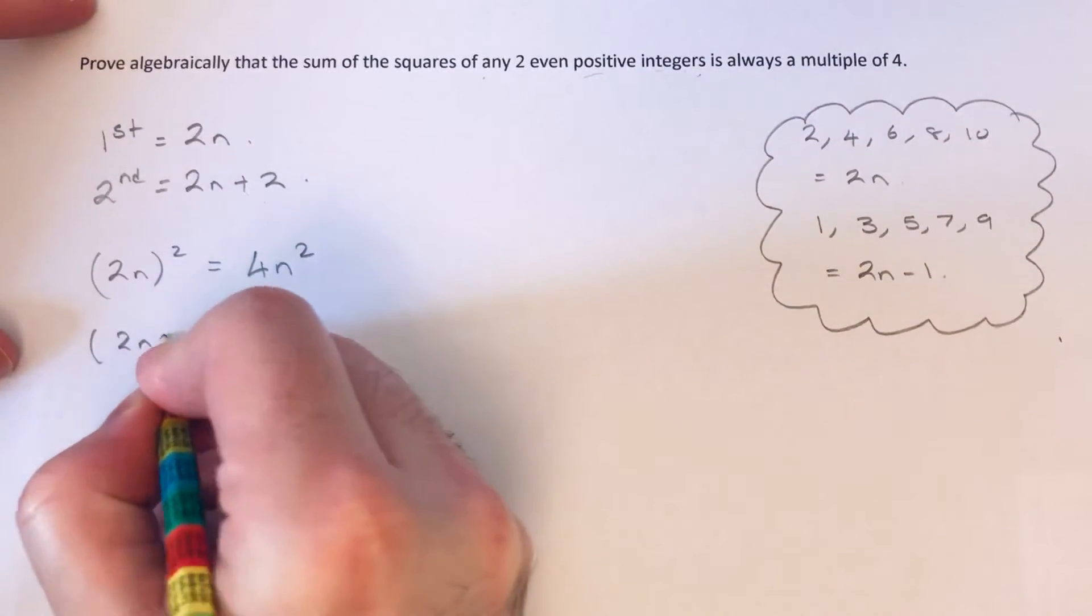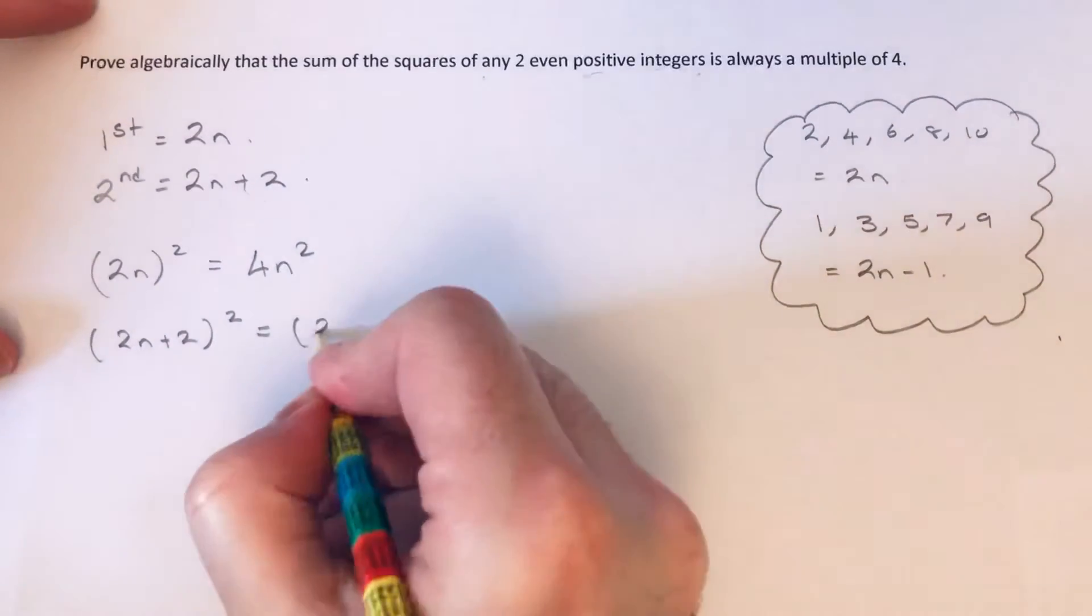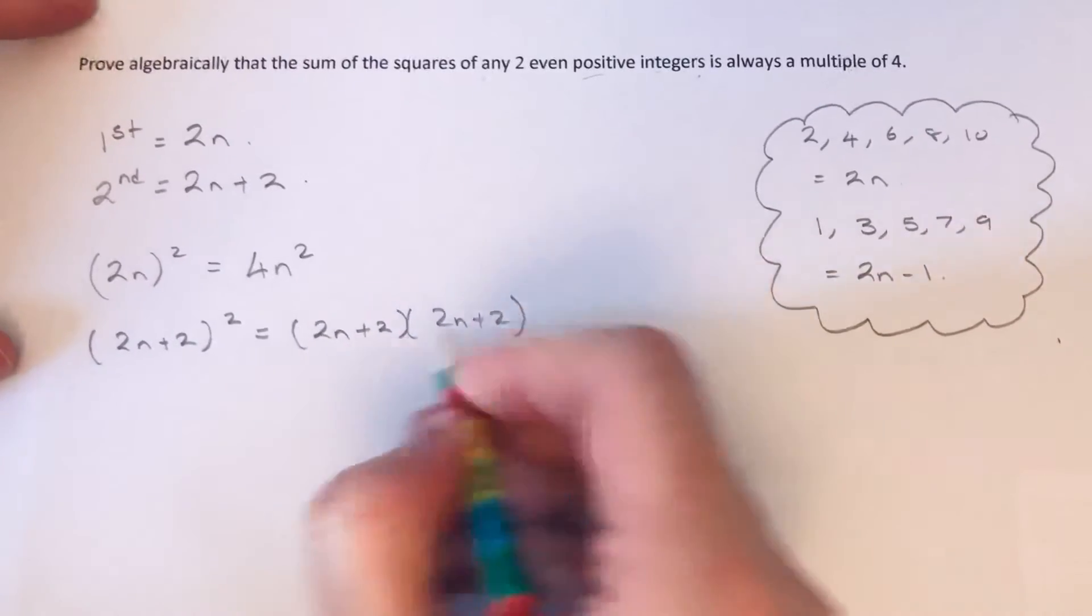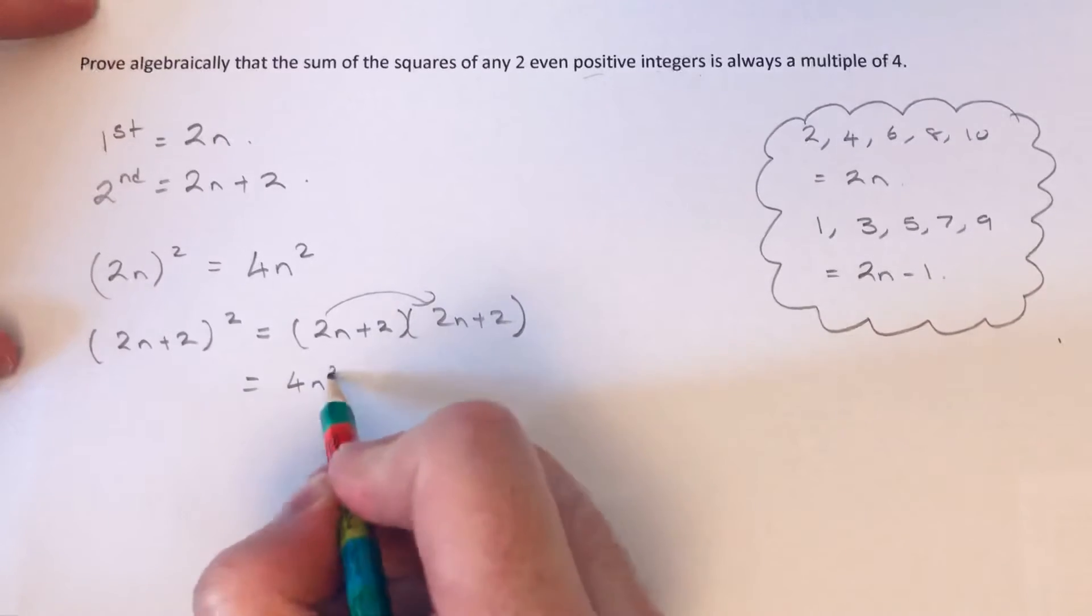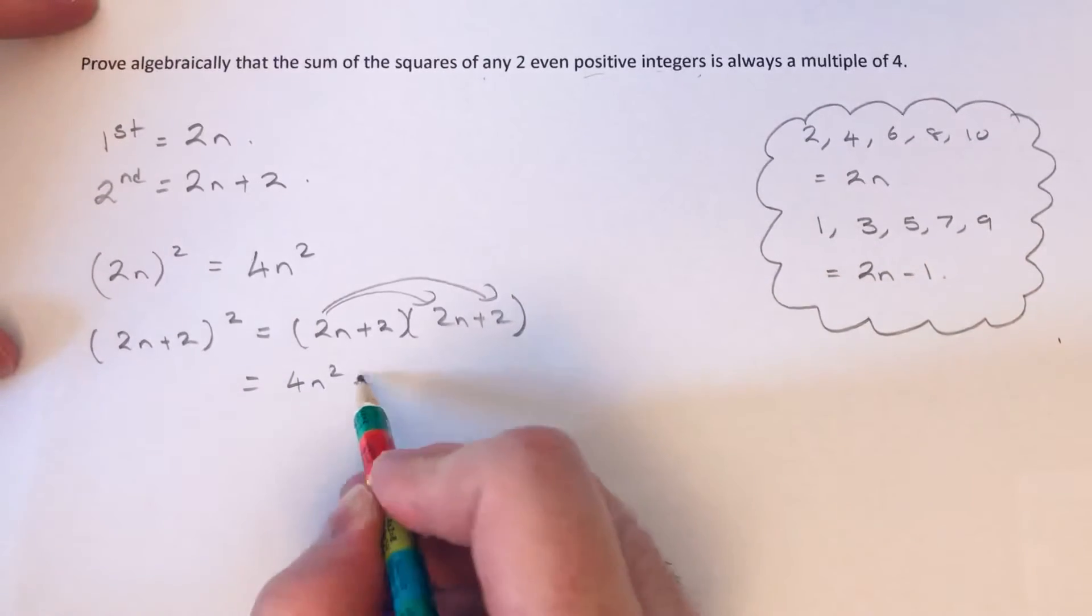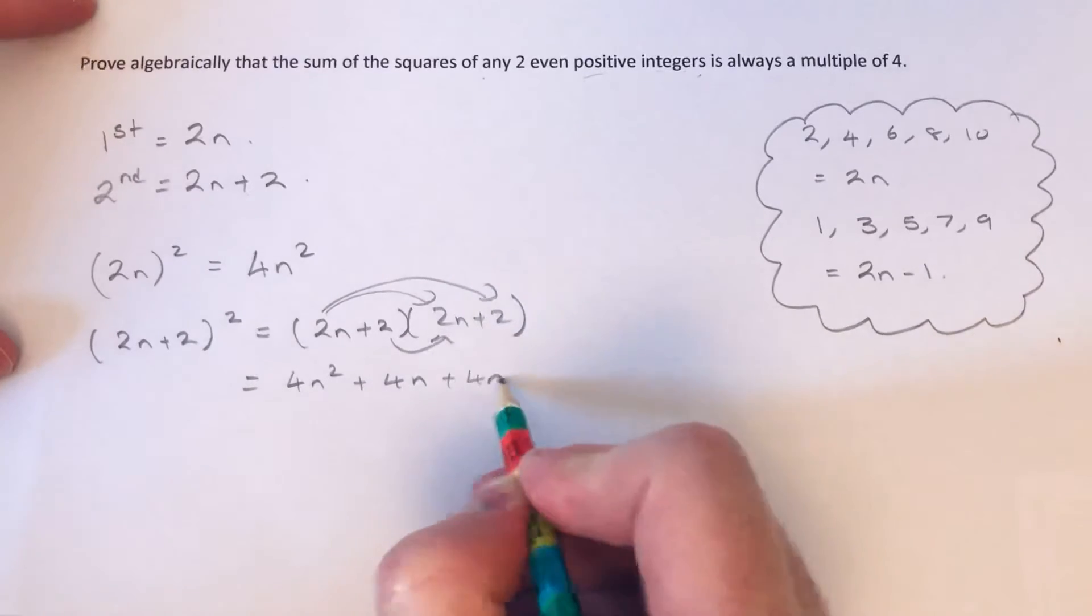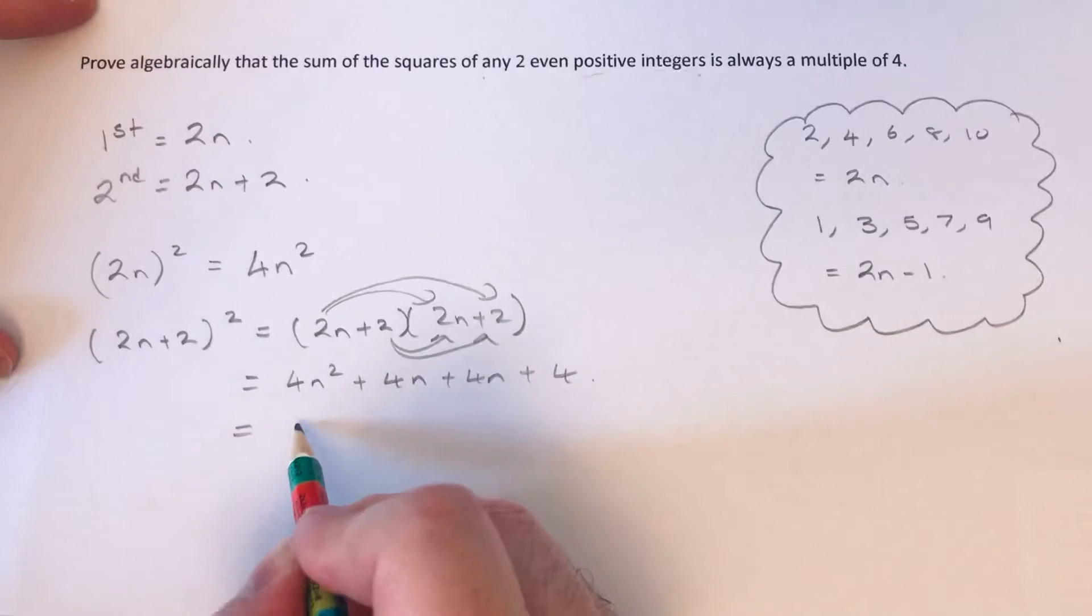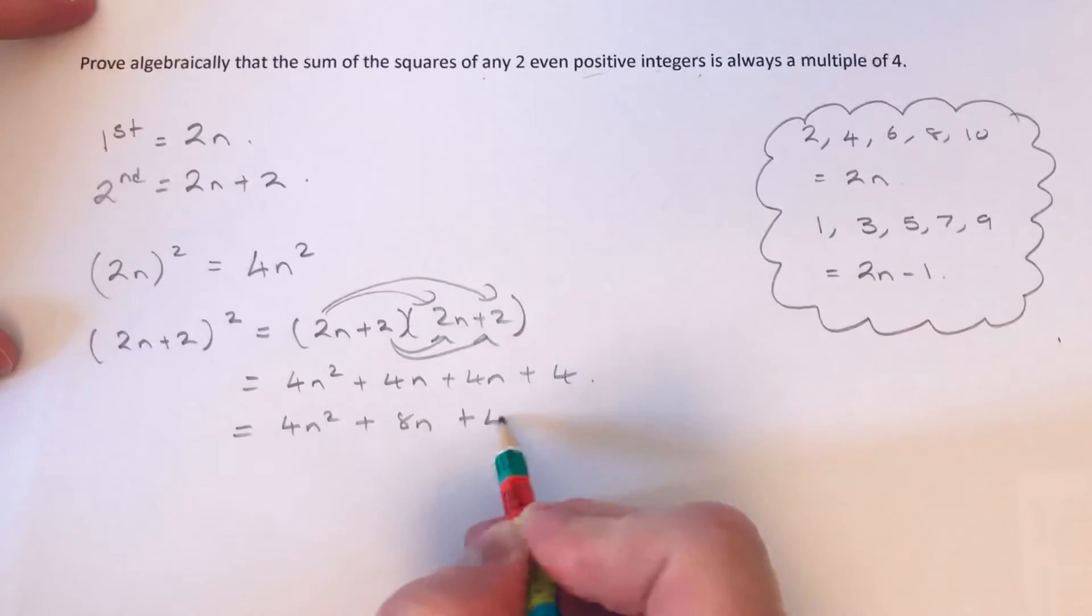And if I square my second integer that I chose, I need to do a double bracket this time. So 2n times 2n is 4n². 2n times 2 is 4n. 2 times 2n is 4n. And 2 times 2 is 4. So we get 4n² plus 8n plus 4.